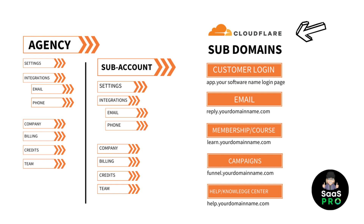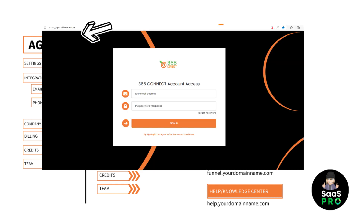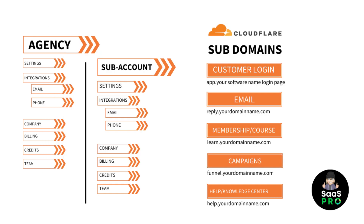This will get your agency all set up so you can send customers a login link — like we do with app.365connect. In this training I'm using app 365 Connect, which is actually being renamed due to rebranding. The main things you need as an agency are a customer login subdomain, an email domain, and of course a phone number.